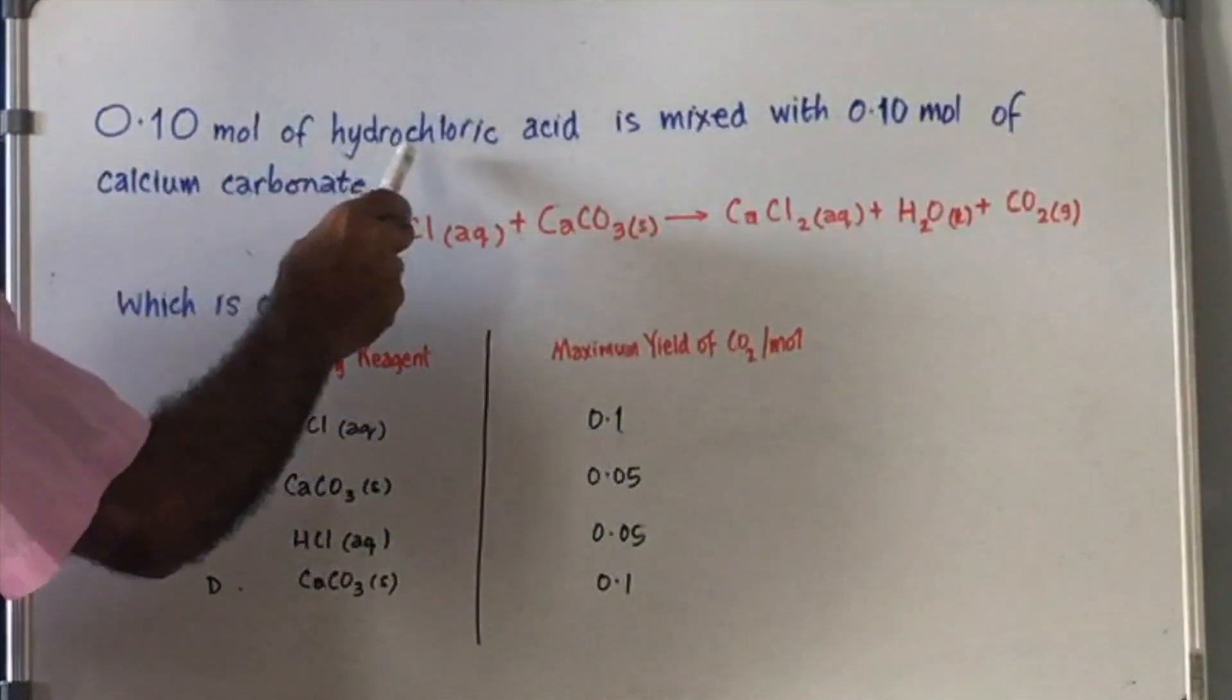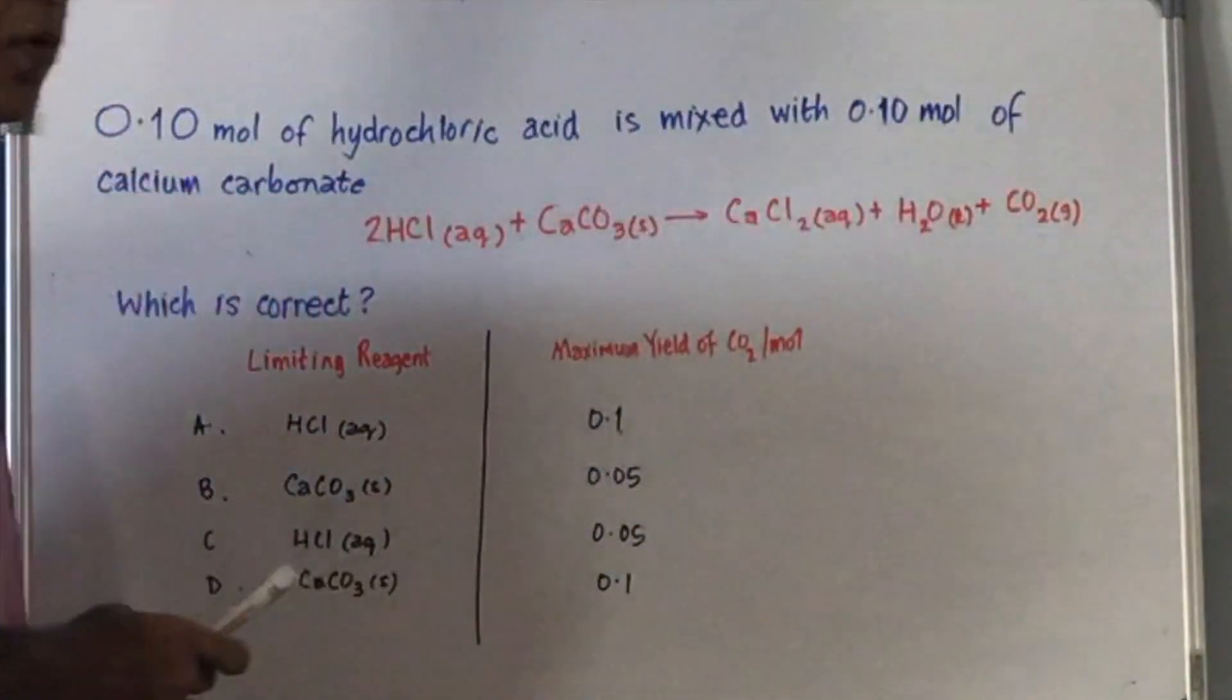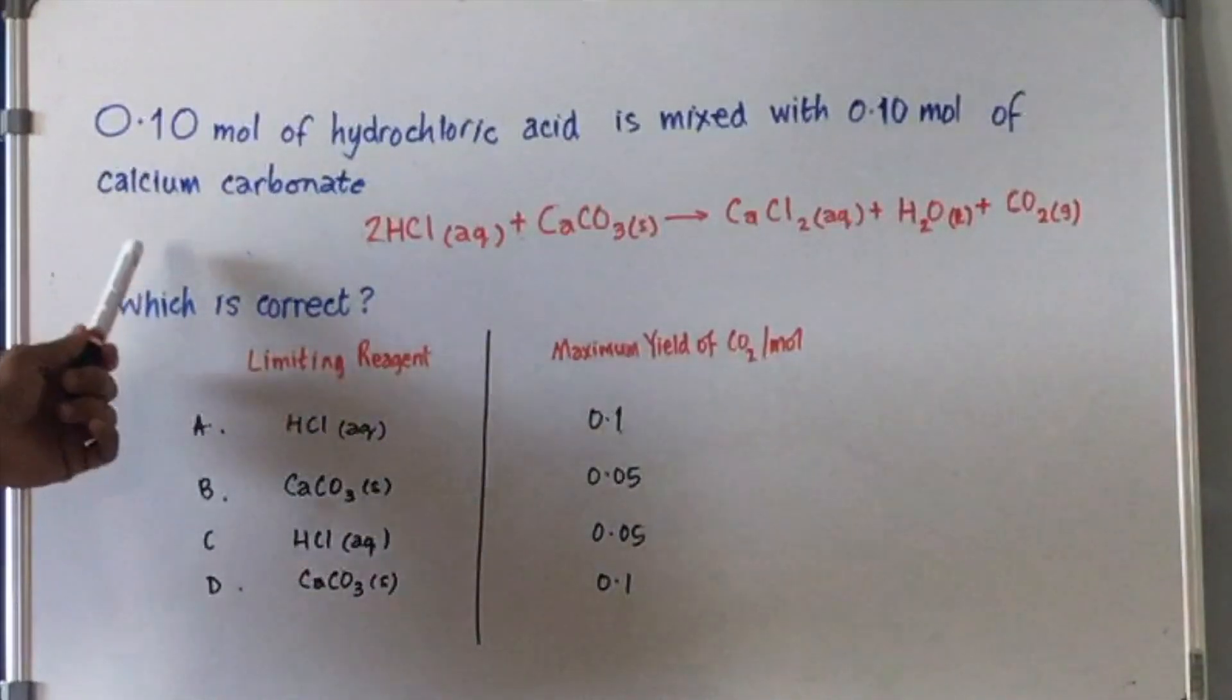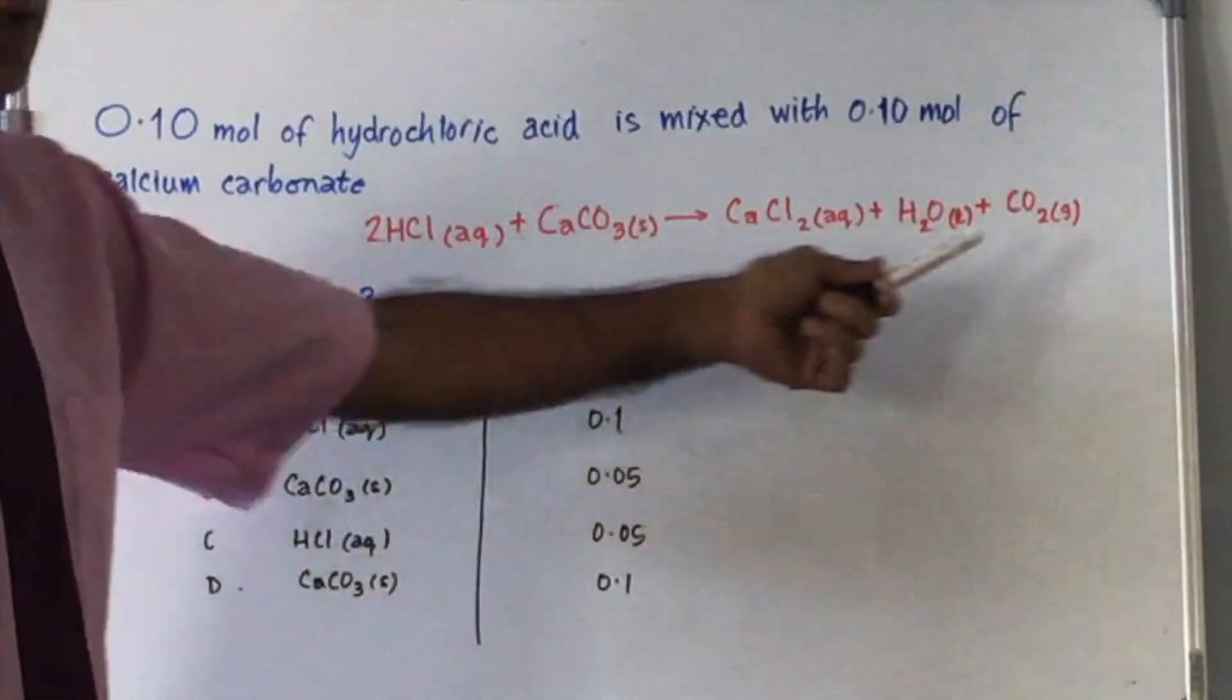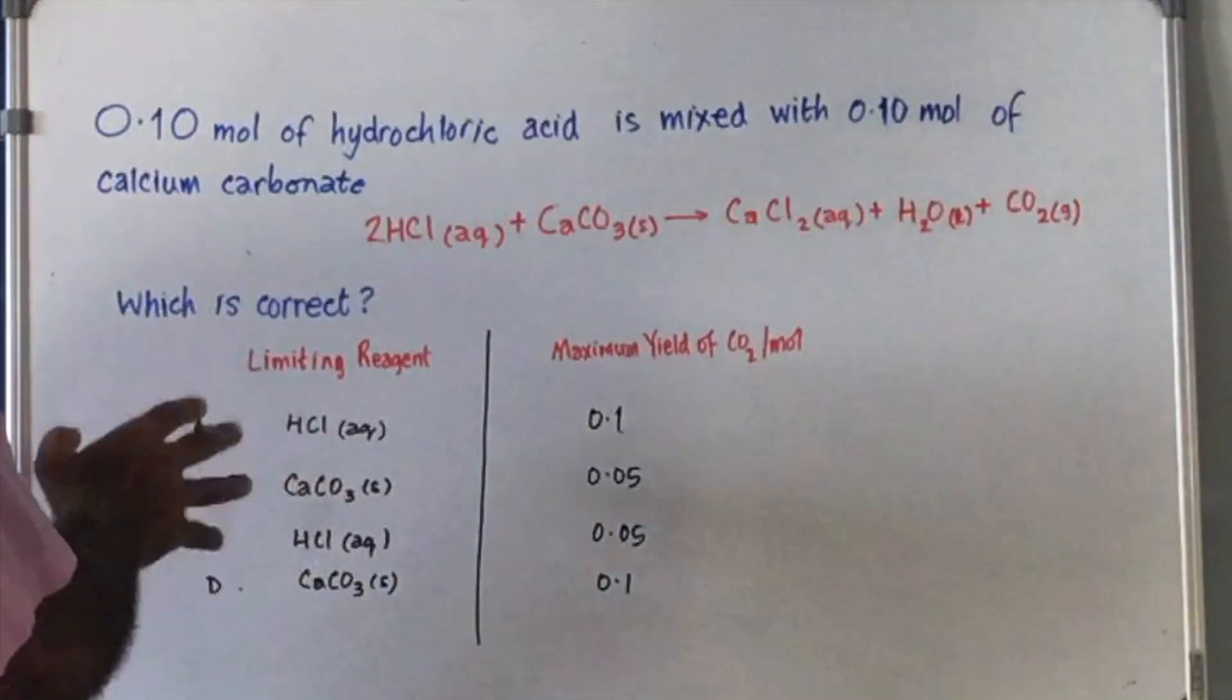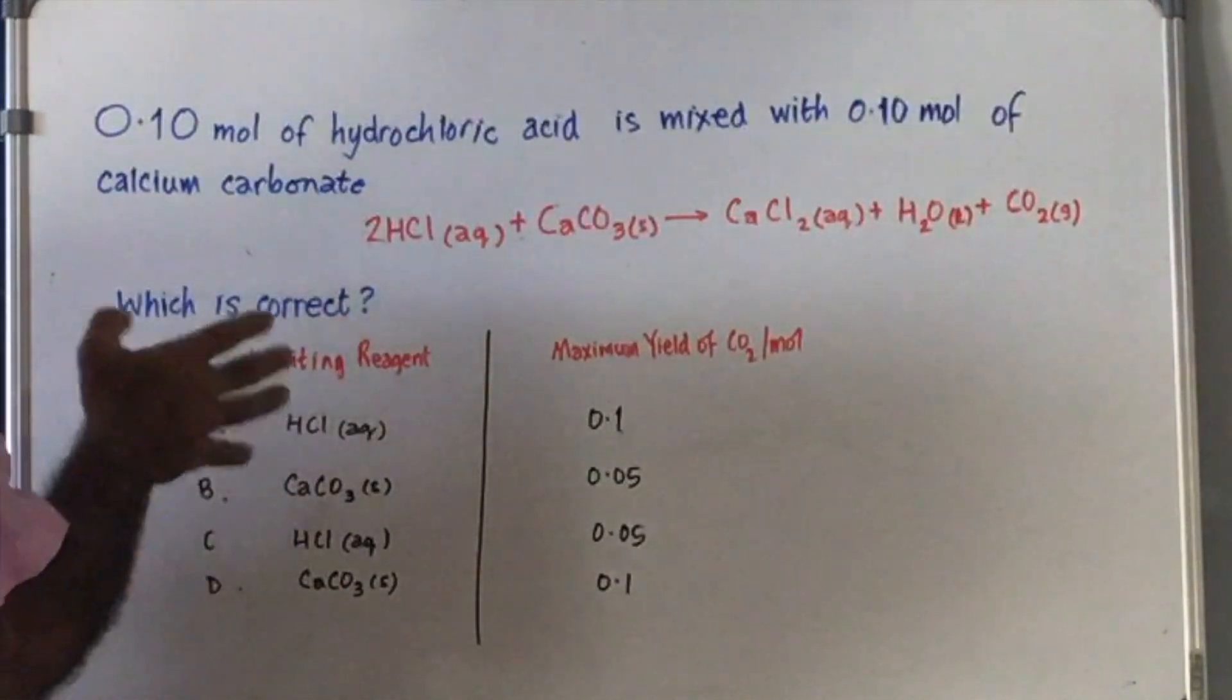0.10 moles of hydrochloric acid is mixed with 0.10 moles of calcium carbonate. You have this equation given to you, and then you ask, which of these is correct?